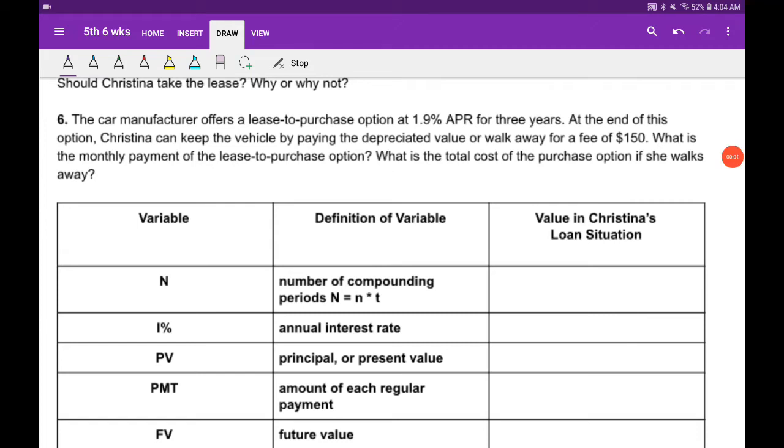Okay, another lease to purchase, a lease option that involves a purchase. So the car manufacturer offers a lease to purchase option at 1.9% APR, low interest rate that catches you. Right at the end of this option, Christina can keep the vehicle by paying a depreciated value or walk away with a fee of $150.